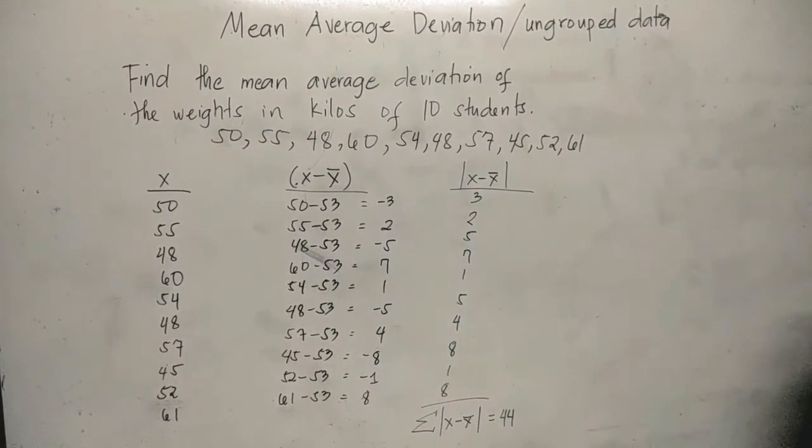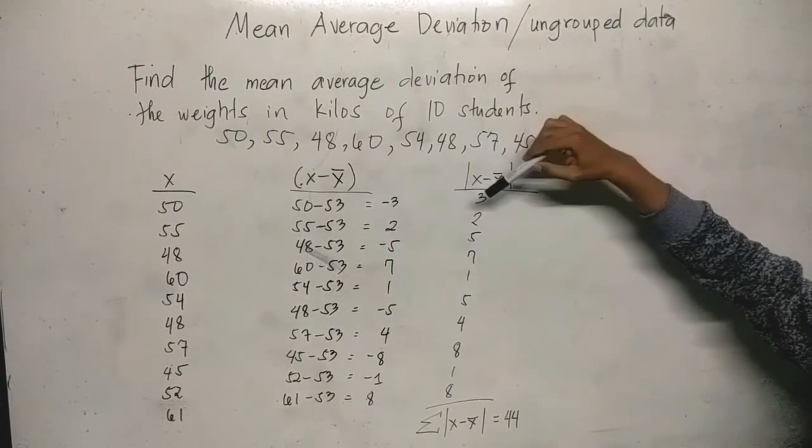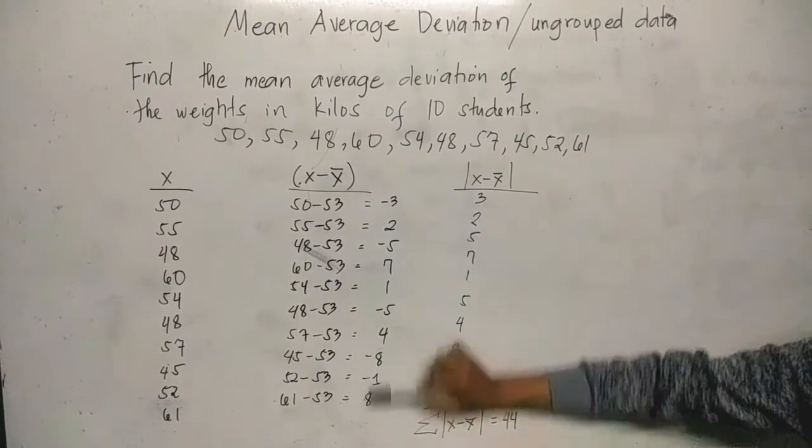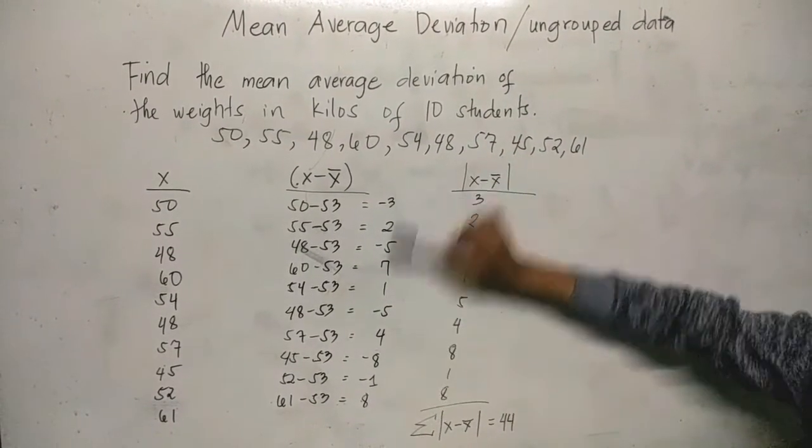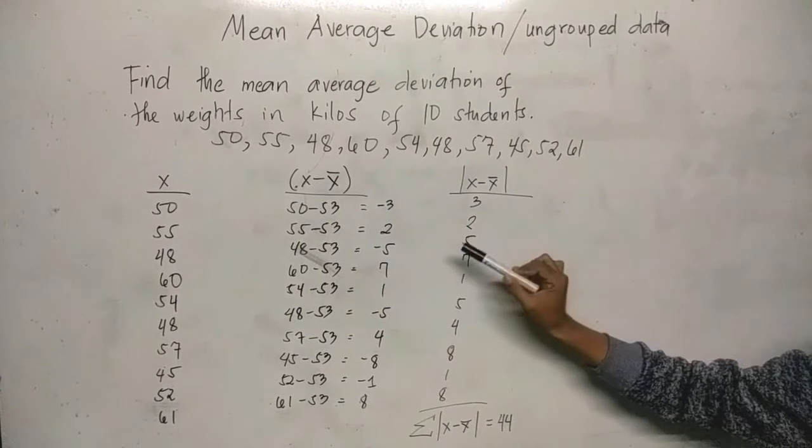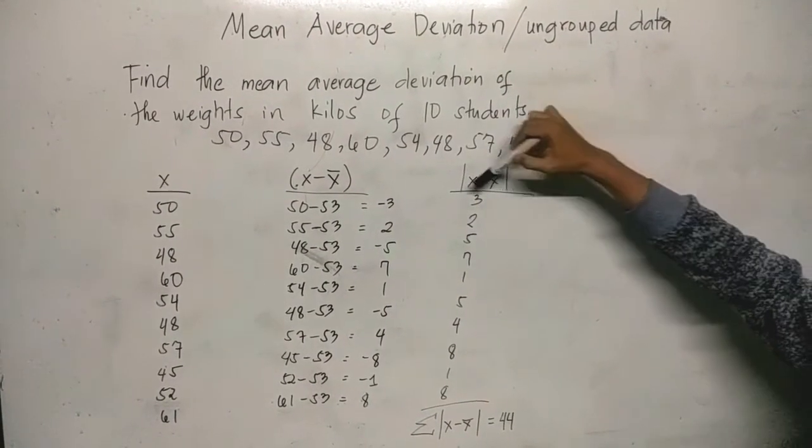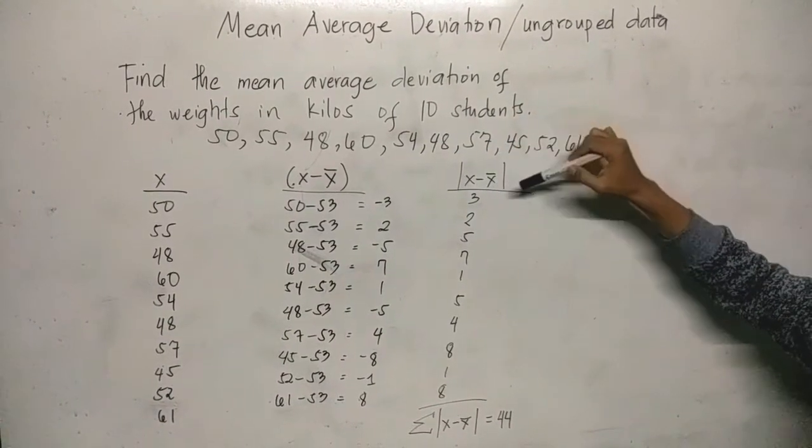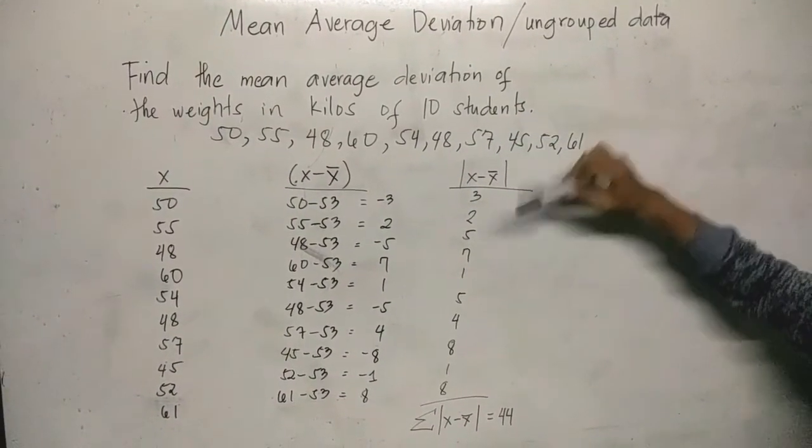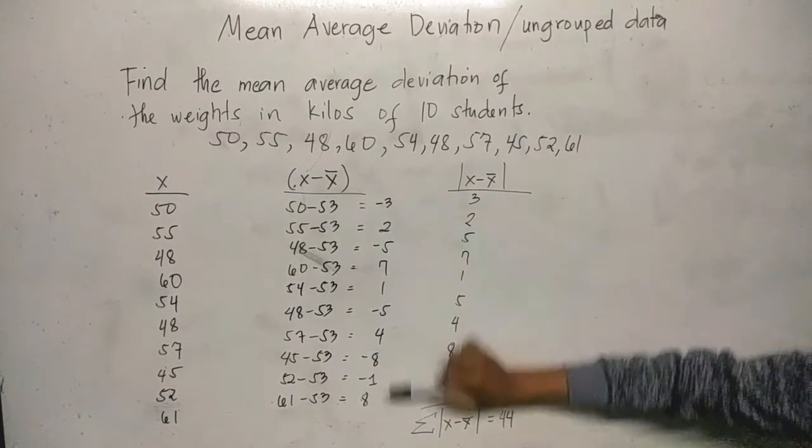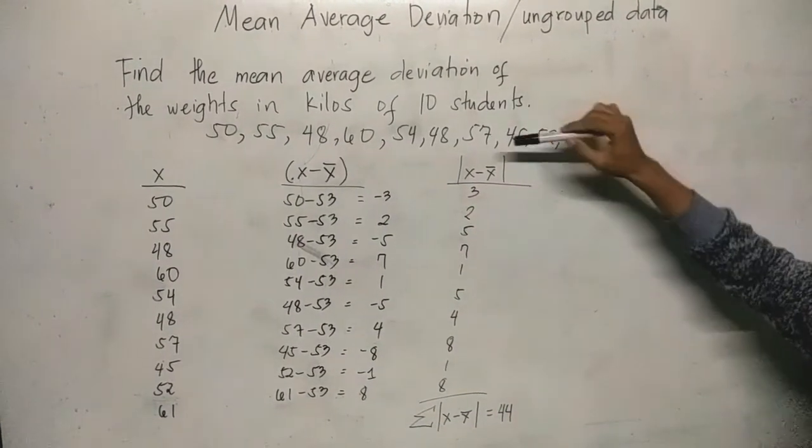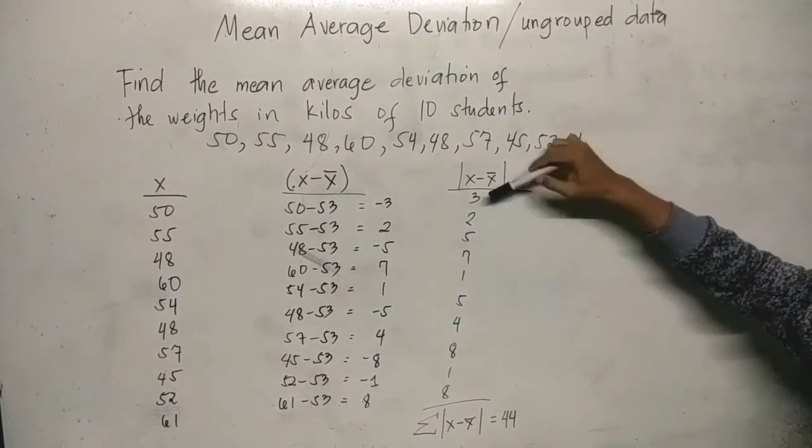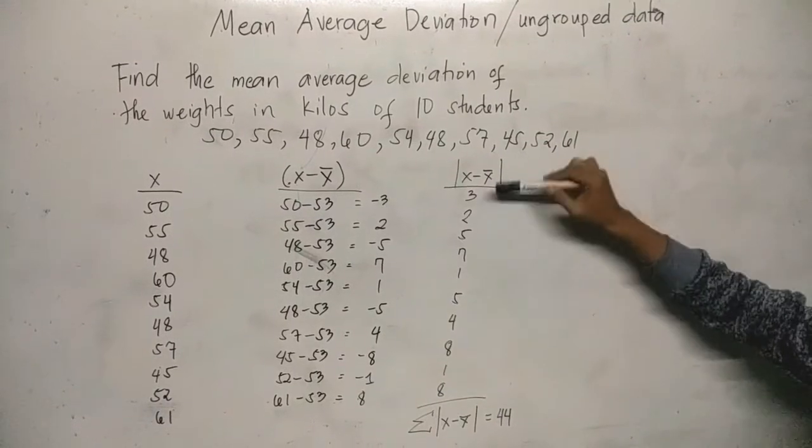Now we are going to get the absolute value of these values or numbers, the results from our subtraction. The symbol is absolute value of x minus x bar or the mean. In short, when values are in absolute value, it means all of them will become positive. All values inside the absolute symbol will become positive, that's why the negative signs disappear.